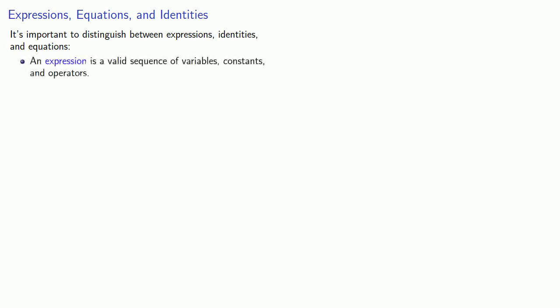An expression is a valid sequence of variables, constants, and operators. So 3x plus 7 is an expression. Cosine is not an expression because it says to take the cosine of something but doesn't specify the something.